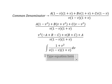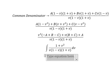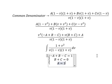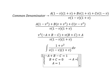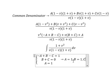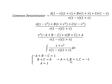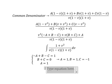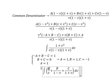Now we create the system of equations and find the solution for A, B, C. We get A equals 1, B equals 1, and C equals negative 1. We then substitute A, B, C back into the partial fractions expression.